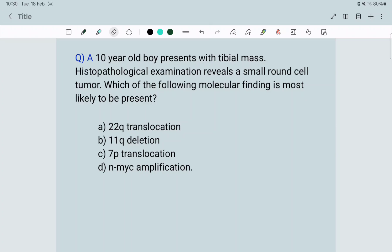First you have to find the diagnosis. The keywords are a 10-year-old boy with a small round cell tumor. A young boy with a small round cell tumor points to Ewing sarcoma.